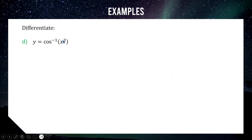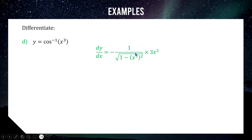For question d: the derivative of cos inverse of x cubed. Setting up the structure, we have negative 1 over the square root of 1 minus (x cubed) squared — the negative because it's cos inverse. Then we apply the chain rule and multiply by the derivative of the inner function x cubed, which is 3x squared. This simplifies to negative 3x squared over the square root of 1 minus x to the power of 6, and that's our final answer.